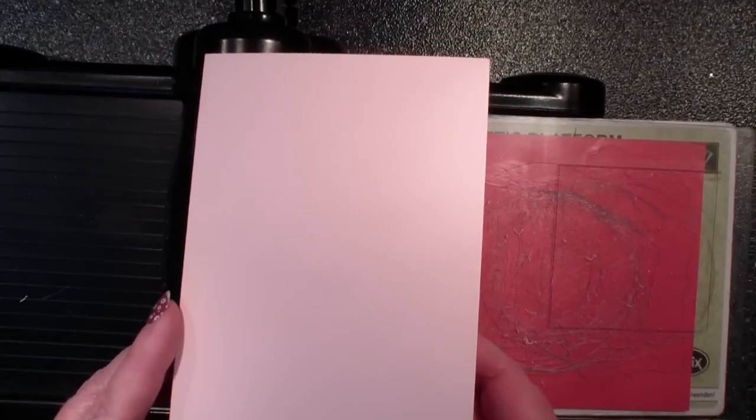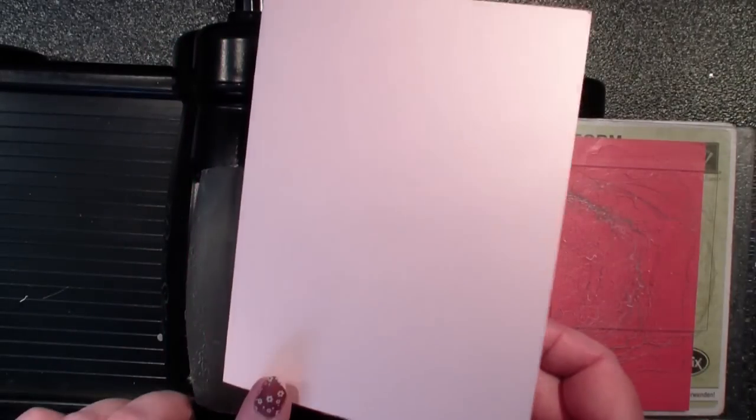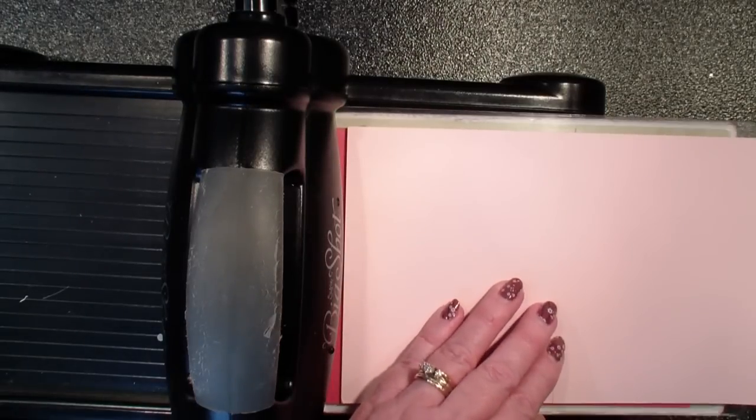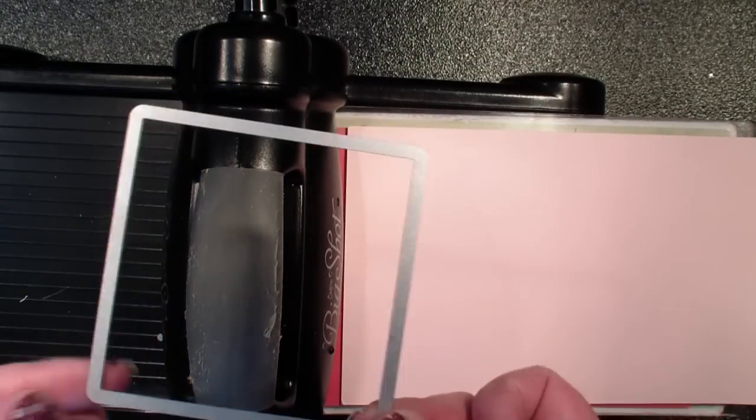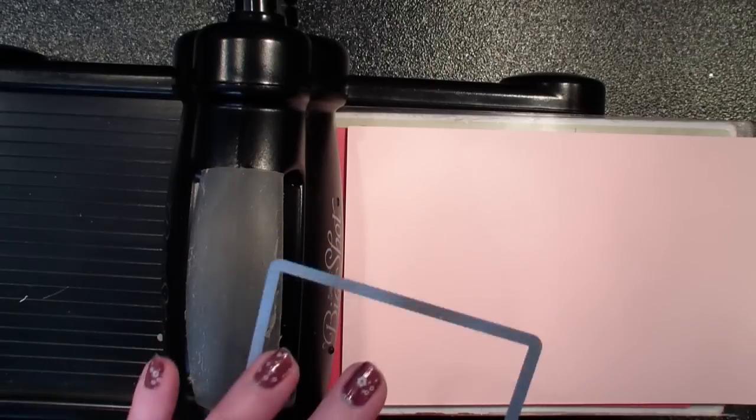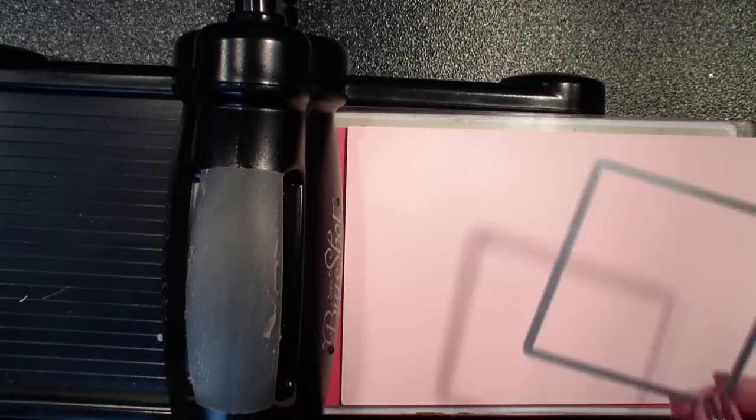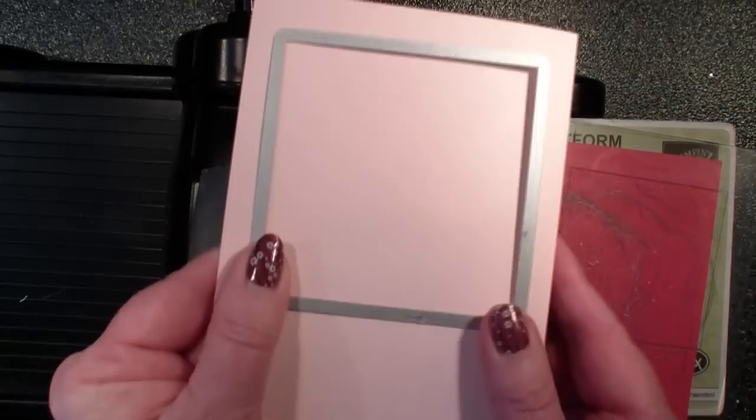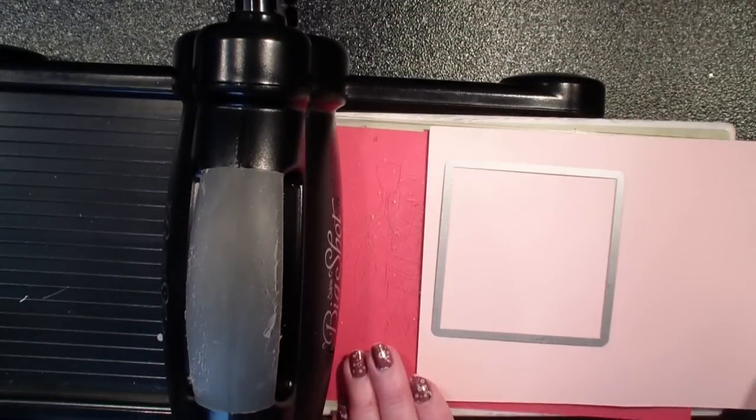I have a standard piece of the pink pirouette card base five and a half by eight and a half. Next what I'm going to do is bring in one of my square framelits. This measures roughly three and a quarter by three and a quarter and I've already scored my card and what I want to do is put that up towards the front like so and cut through.